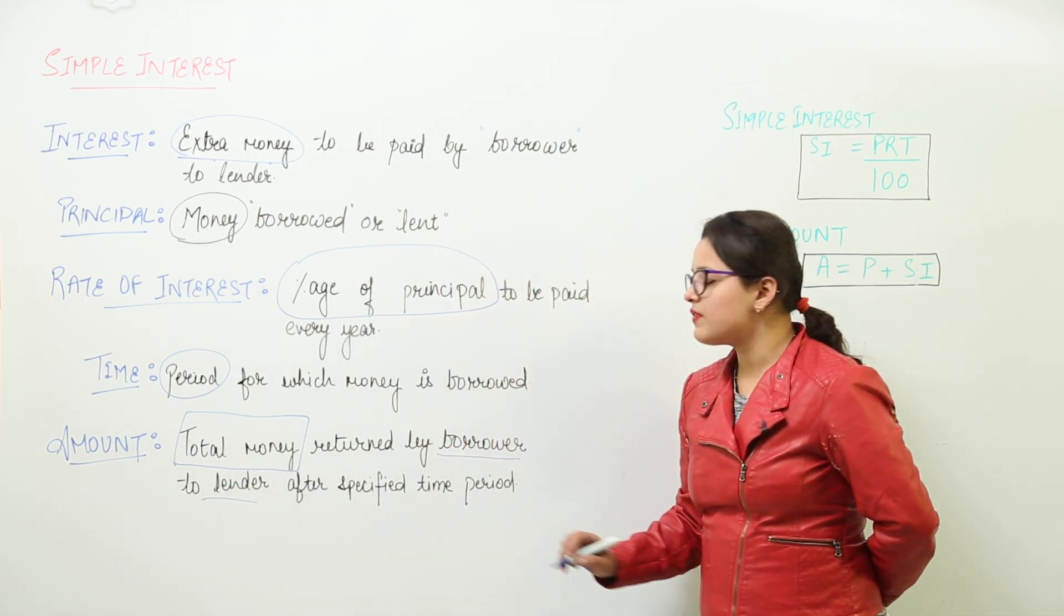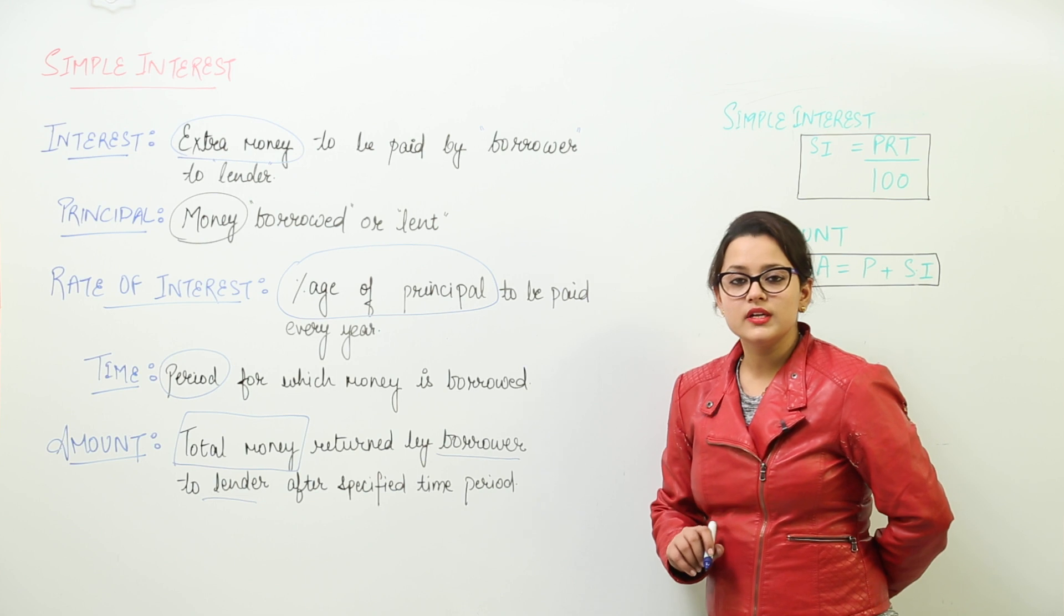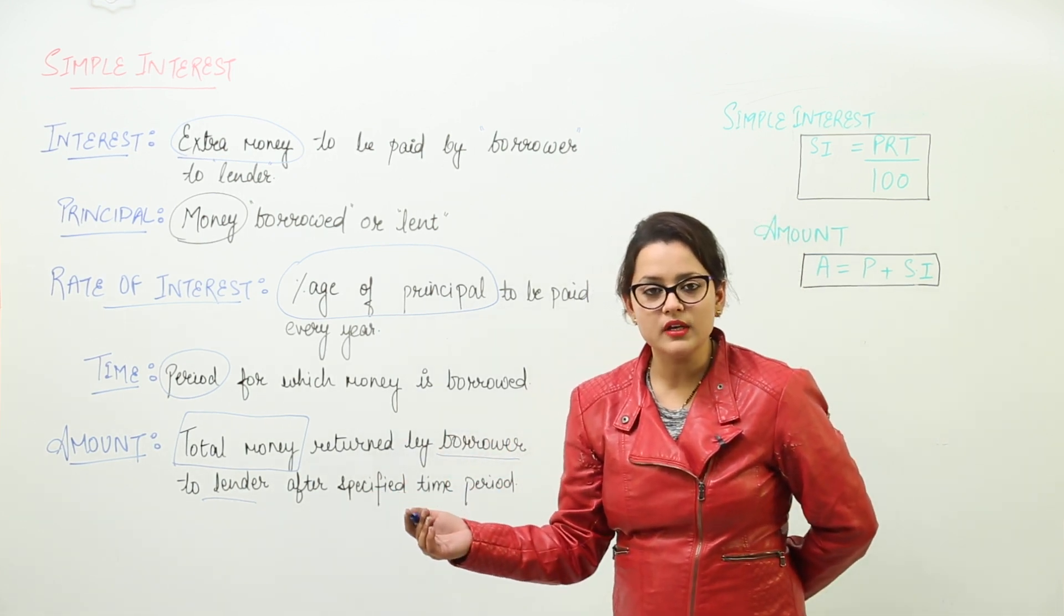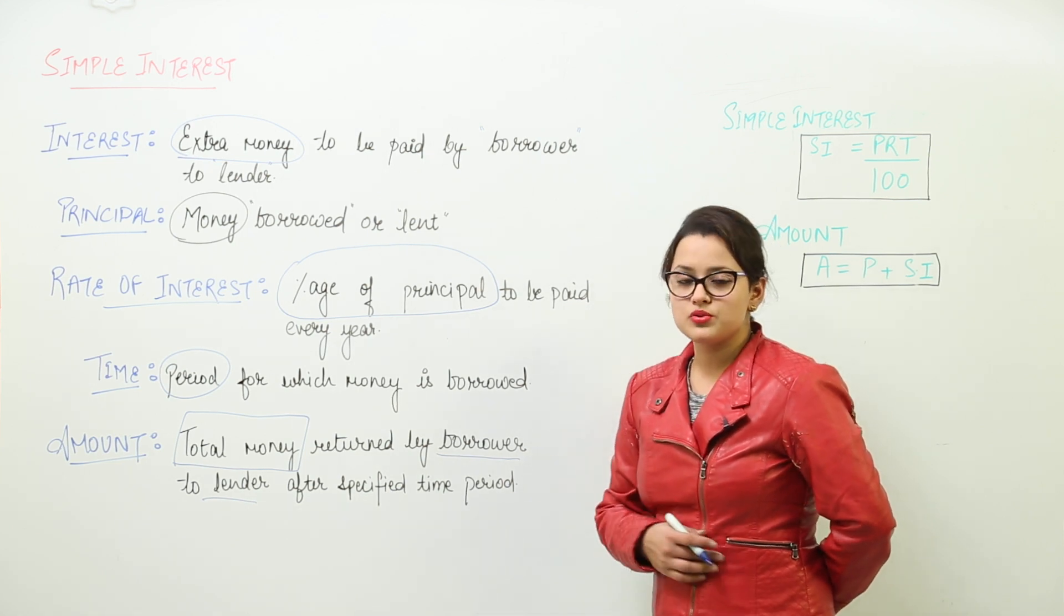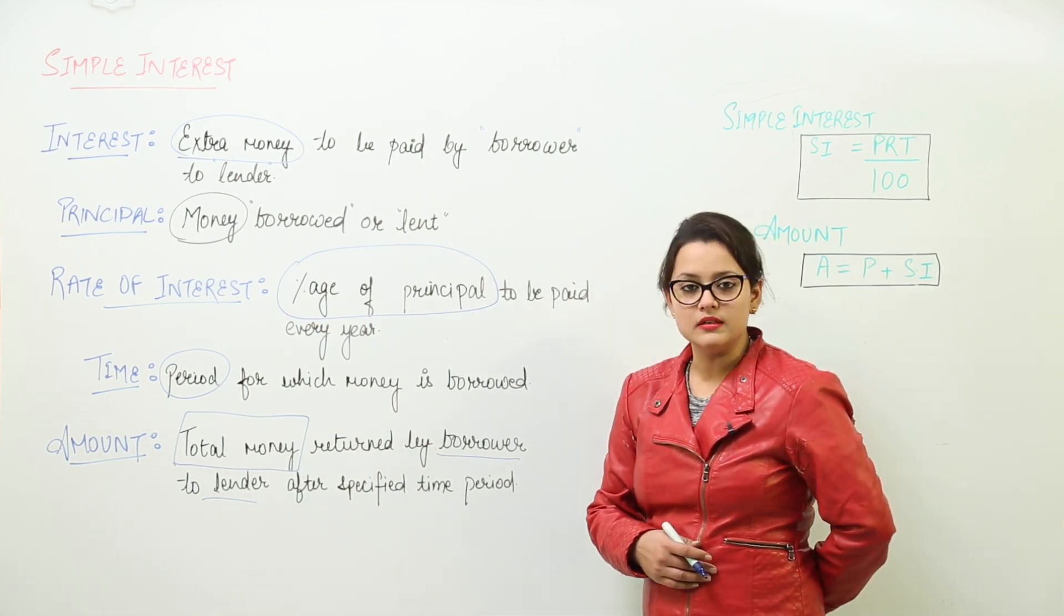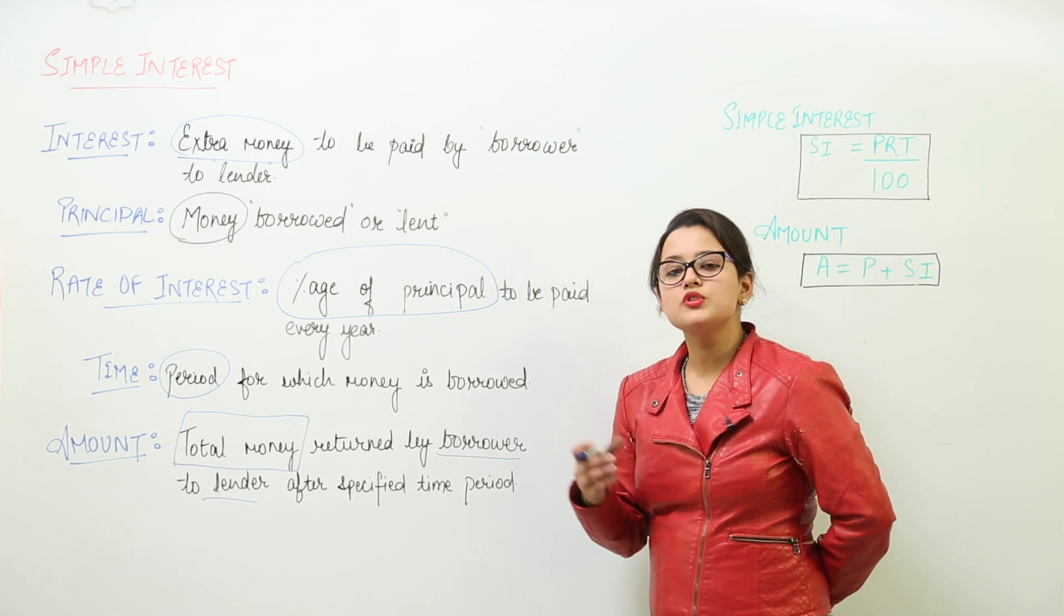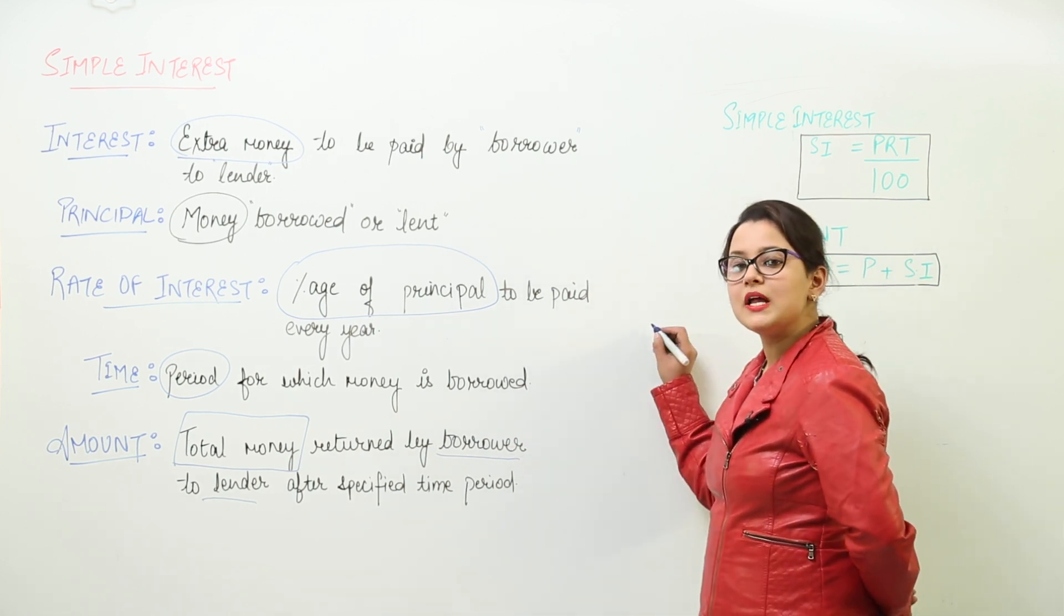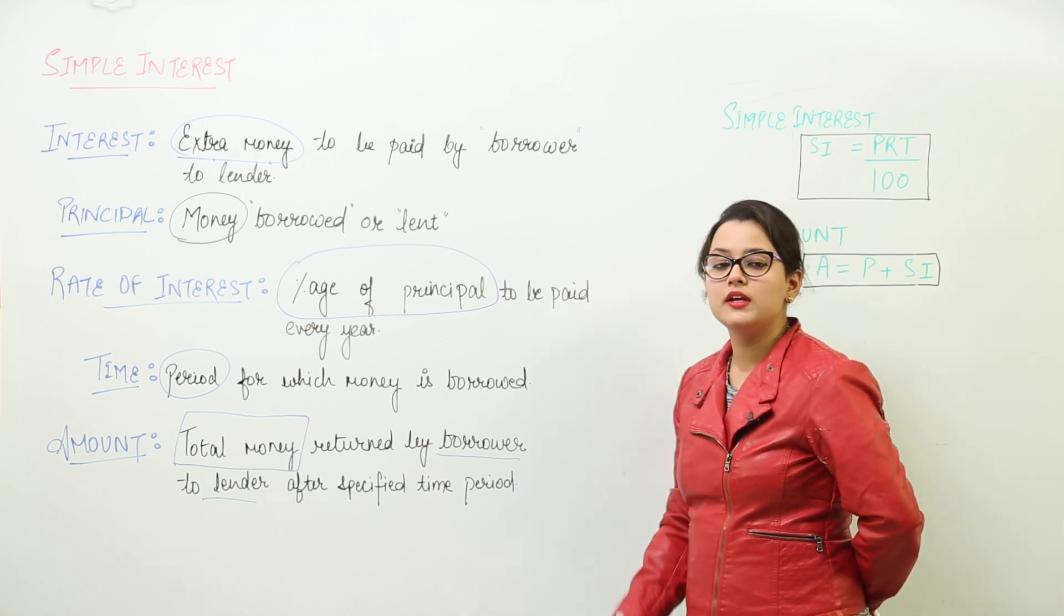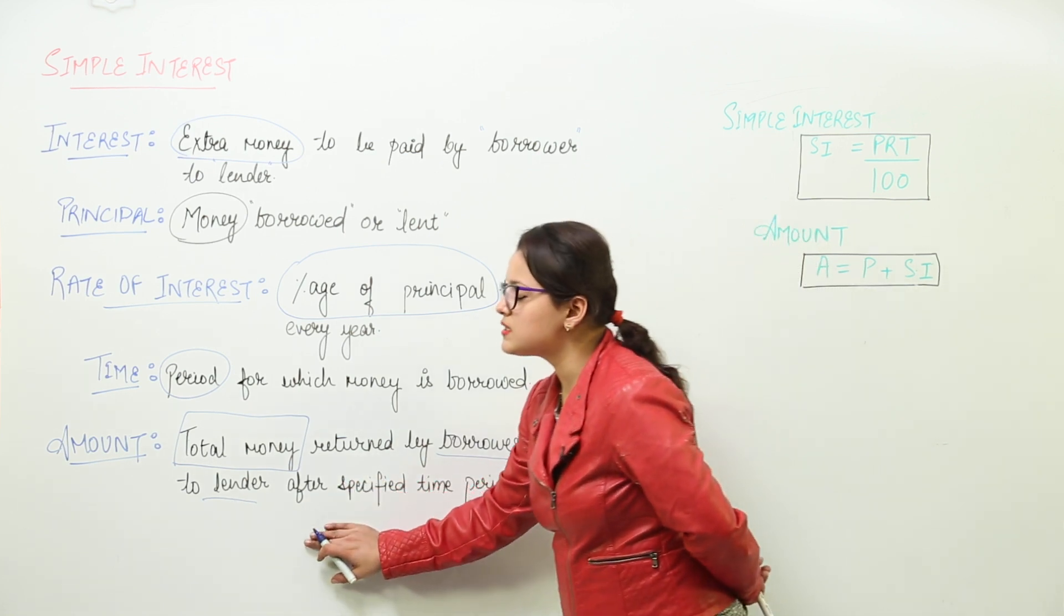For example, I had borrowed 100 rupees from my friend. Now I will be returning back 110 rupees to her after a year. So after a year, how much money am I returning back to her? I am returning back 100 plus rupees 10, that is 110. So 110 rupees is my amount.